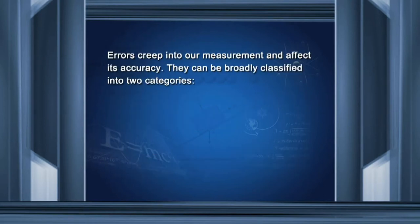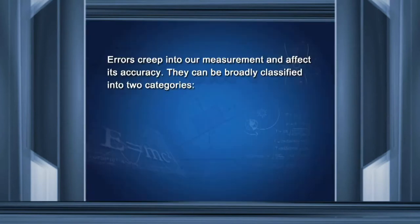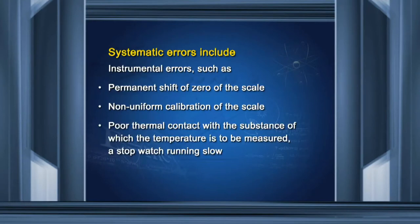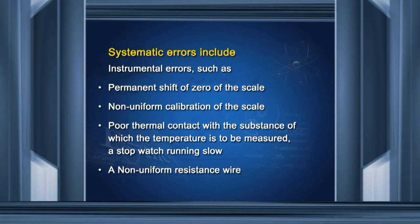Errors creep into our measurements and affect their accuracy. Errors can be broadly classified into two categories: systematic errors and random errors. Systematic errors include errors in the instrumentation, such as a permanent shift of the zero of the scale, non-uniform calibration of the scale, poor thermal contact with the substance whose temperature is to be measured, a stopwatch which is running slow, and a non-uniform resistance wire. All these cause systematic errors.